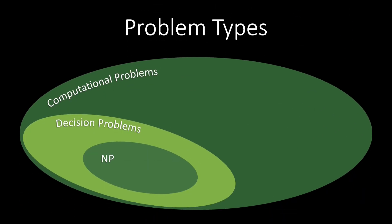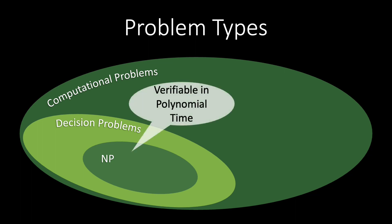More formally, the class NP contains all decision problems for which we can construct an algorithm that takes two arguments — a problem instance X and a certificate Y — runs in time polynomial in the size of the input, and outputs true if the answer to the decision problem is true, and false otherwise. Often, the certificate is just a particular solution, and the algorithm verifies that the suggested solution is correct.